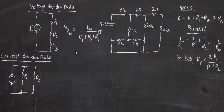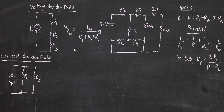Hi, today we're going to be starting our first tutorial on DC circuits. The first things we're going to learn about are the basics: series and parallel circuits, the voltage divider rule, and the current divider rule. These are fairly simple — the basic format of how to solve a normal circuit. Later on, after this video, we're going to be starting with methods of analysis.